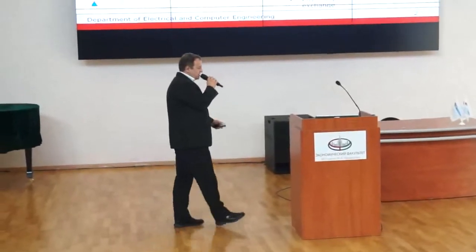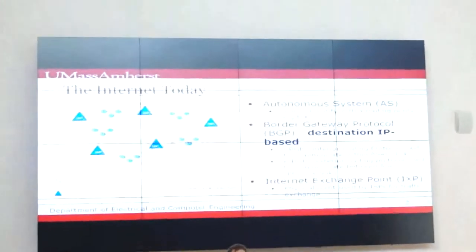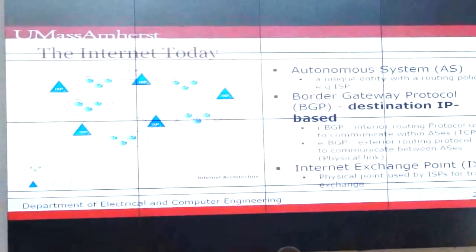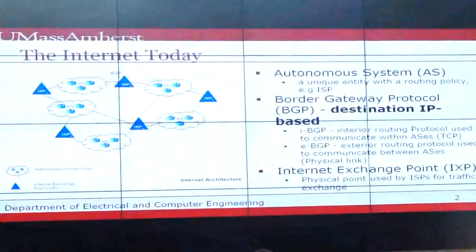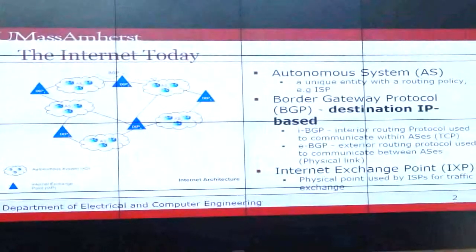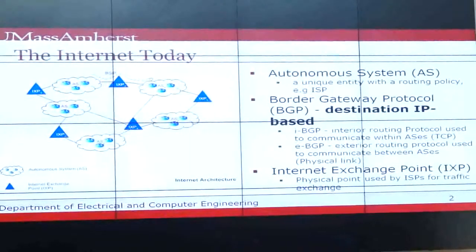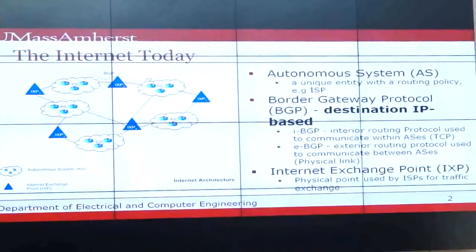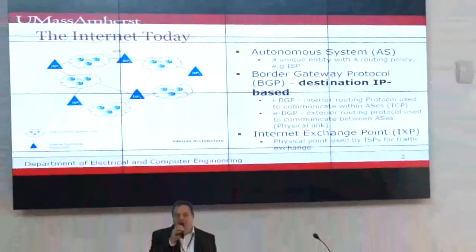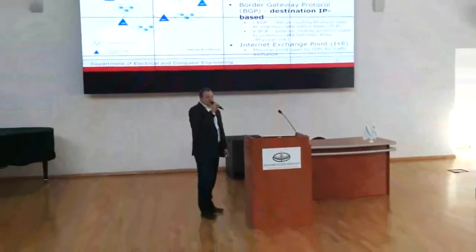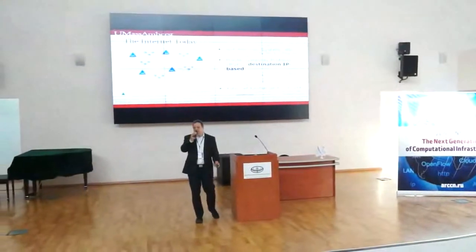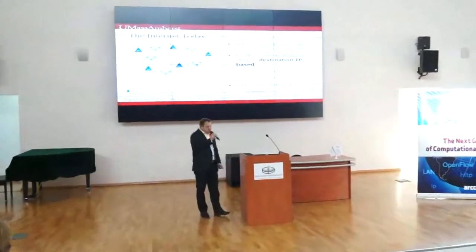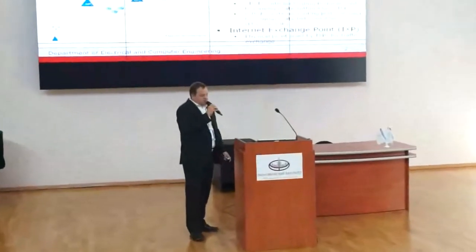This is nothing new to you — this is how the internet looks today. We're talking about autonomous systems connected via BGP. We have a gateway protocol that tries to keep them all together, and most of the time it works pretty well. But it's totally out of our control. How these autonomous systems are connected is way above us, and there's nothing we can do. It's all kind of baked into the internet exchange points.